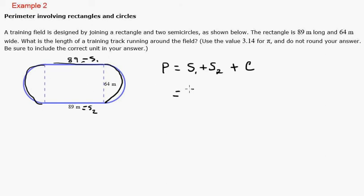So now we just plug and play. So that's 89 plus 89 plus, and then circumference is 2 pi r. So it's going to be 2 times 3.14. And what would the radius be?